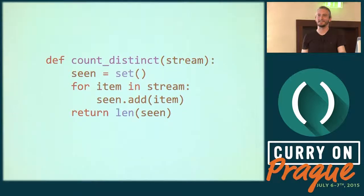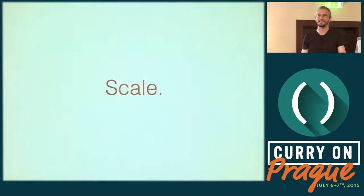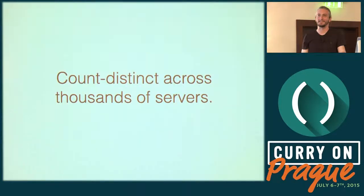For the naive solution, adding an element is an amortized constant time operation, finding the length is constant time, but the space grows linearly with the number of entries. The difficulties with count distinct come with scale. It's easy and cheap to count a thousand or a million unique users, IPs, URLs, or words — but how about a hundred million per server across thousands of servers? Let's make that the problem: perform a count distinct across a thousand servers, each with as many as a hundred million unique items, and find the cardinality of the union of their results — a distributed count distinct.